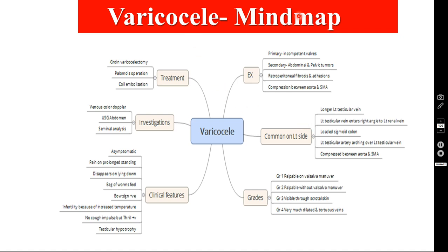This is the main thing in this video — the mind map for varicocele. Varicocele etiology: if it is primary, the cause is incompetent valves. If it is secondary varicocele, the patient may have abdominal or pelvic tumours, retroperitoneal fibrosis, or compression of the left renal vein between the aorta and superior mesenteric artery.